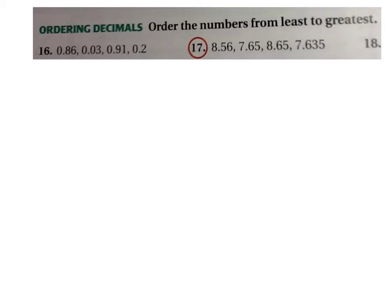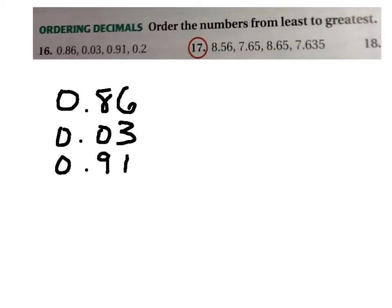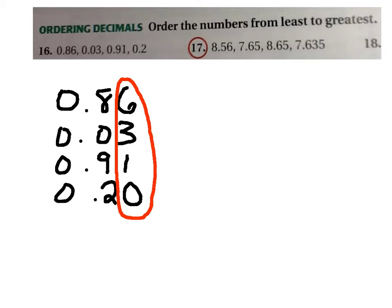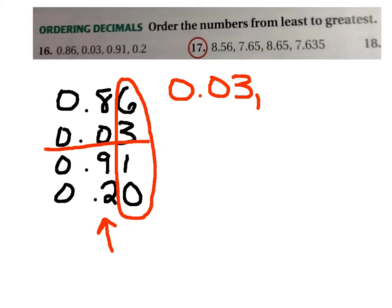When we order decimals, we can order them in two ways. First, we could list the numbers we're working with: eighty-six hundredths, three hundredths, ninety-one hundredths, two tenths. My two tenths is actually twenty hundredths. Adding this zero right here does not change the value — this number is still two tenths. Now I can look at my hundredths place first, and I notice that three hundredths has the least amount of tenths, so that's going to be my smallest number if we're going least to greatest.